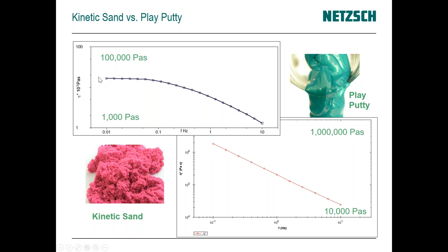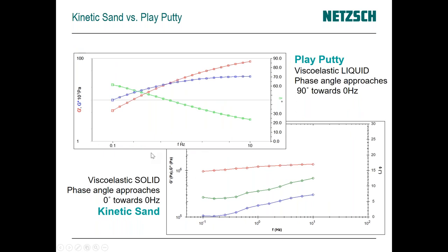Looking at the differences in behavior: we saw the viscosity of play putty earlier, and now here's the viscosity of kinetic sand. Once kinetic sand has been sheared it flows easily, but once it's packed it doesn't want to flow — it's very rigid. The viscoelastic properties are significantly different as well: play putty is viscously dominated at low shear rates and low frequencies, but elastically dominated at high frequencies. Kinetic sand is elastically dominated over the entire range.